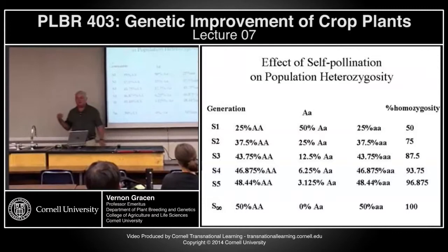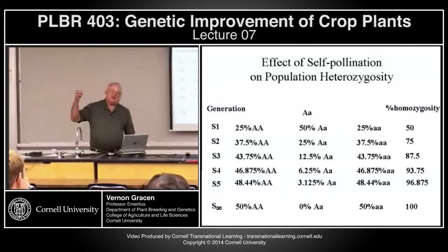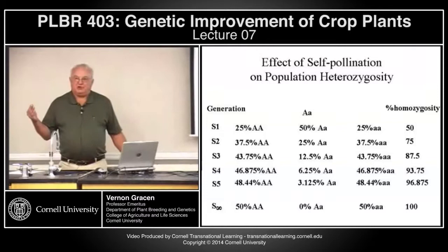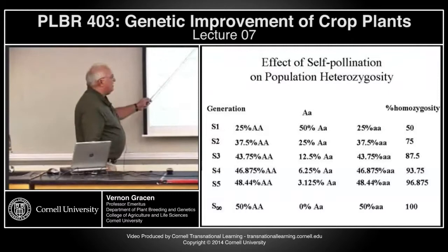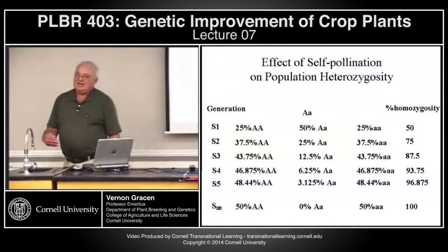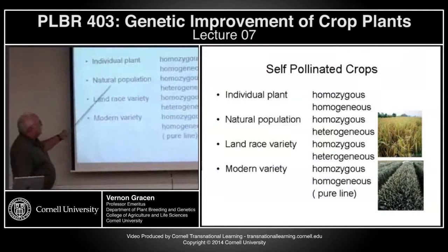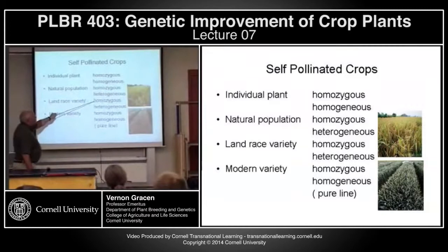That never actually happens in nature because most of these crops have a little bit of outcrossing. So if we get to 98% homozygous in a pure-line cultivar, that's pretty good. To summarize: individual plants are homozygous. Land-race varieties are homozygous but heterogeneous. Pure-line varieties are homozygous and homogeneous — you develop varieties where every plant looks pretty much identical to every other plant in the population.